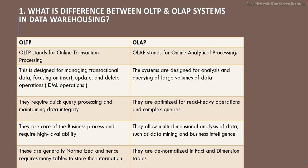Let's start. The first question is: what is the difference between OLTP and OLAP systems in data warehousing? These are two different systems. I would say OLAP comes pre-ETL processing and OLTP comes post-ETL processing — that's basically how I see this. OLTP stands for Online Transaction Processing and OLAP stands for Online Analytical Processing.